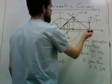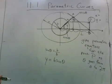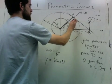This is the length we want to know. Let's call it l. So we know opposite over adjacent.